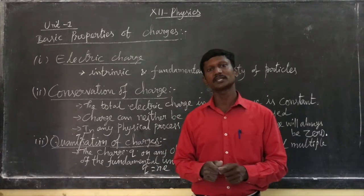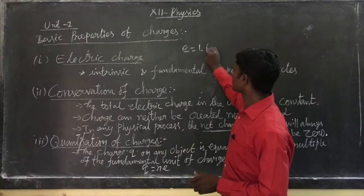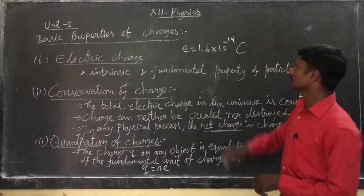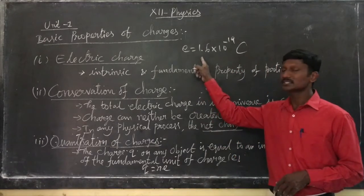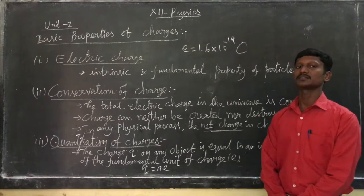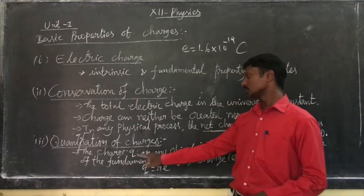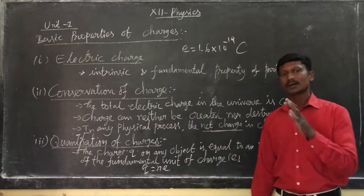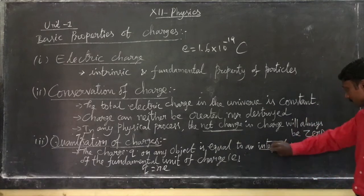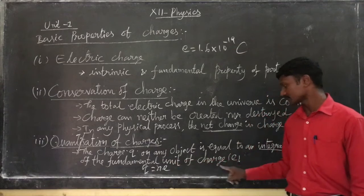The quantization unit is e, where e is equal to 1.6 × 10⁻¹⁹ Coulombs. So in fundamental terms, integral particles carry the charge. That is the quantization of charge. The charge Q on any object is always equal to an integral multiple of the fundamental unit of charge, that is e.